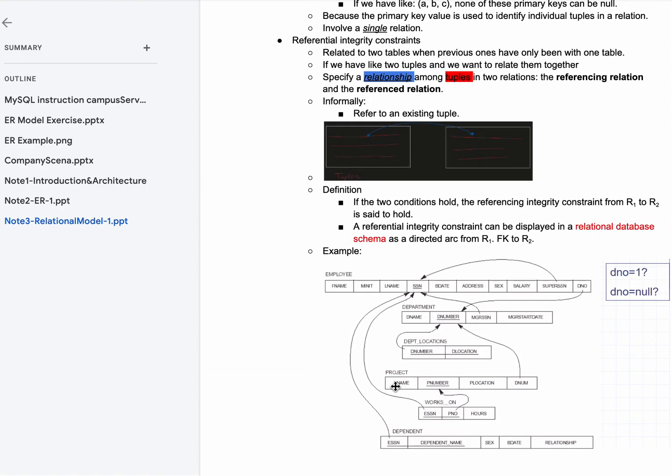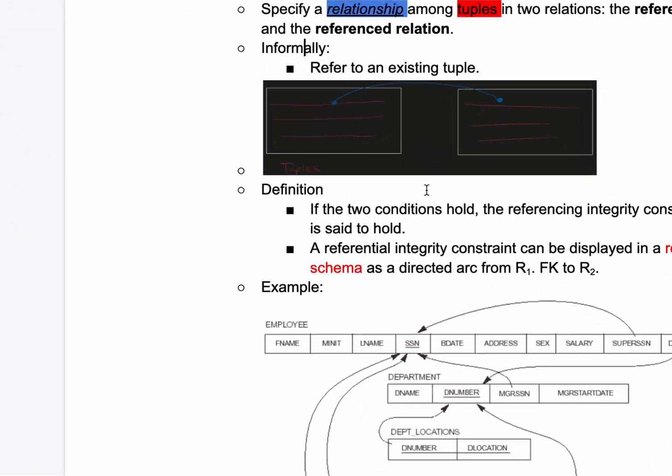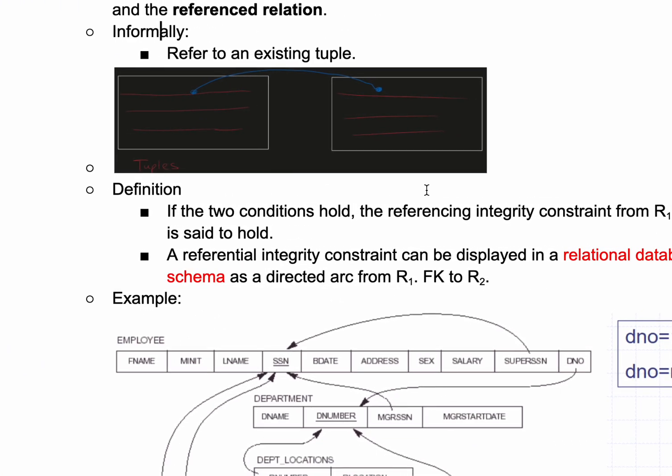With foreign key in mind, we can do this example. Informally, we are going to refer to an existing tuple. Remember, with foreign key, it has to exist.